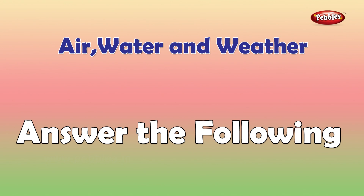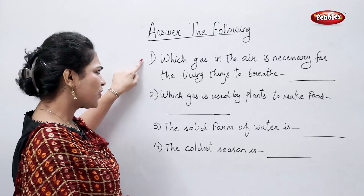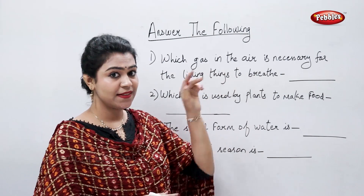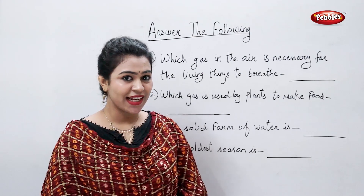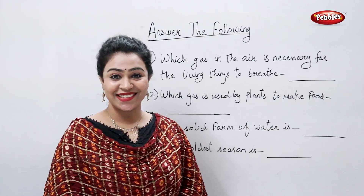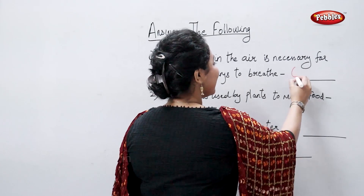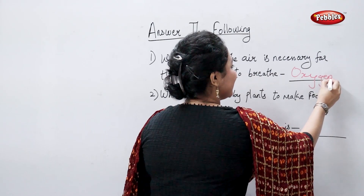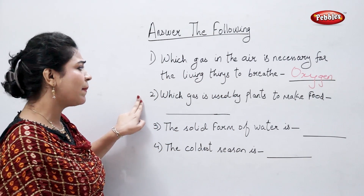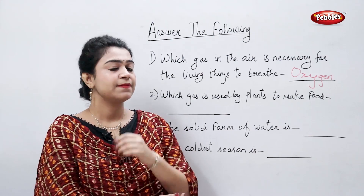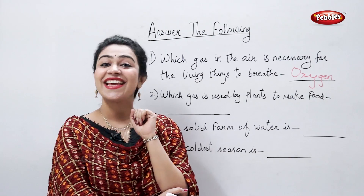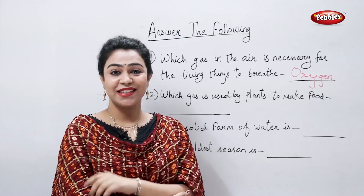Which gas in the air is necessary for living things to breathe? Yes, that's oxygen. Which gas is used by plants to make food? Yes, that's carbon dioxide.